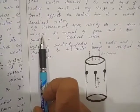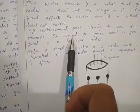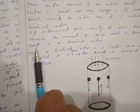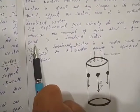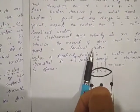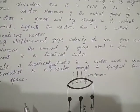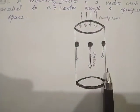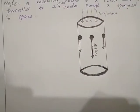Whereas the moment of force about a given point is an example of a localized vector. To illustrate this, consider a cylindrical vessel with a ball in the center.